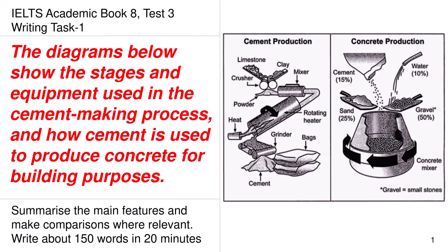Today, we will be discussing the IELTS Academic Book 8, Test 3, Writing Task 1. The topic is: the diagrams below show the stages and equipment used in the cement making process and how cement is used to produce concrete for building purposes.